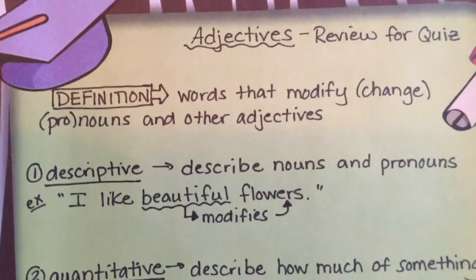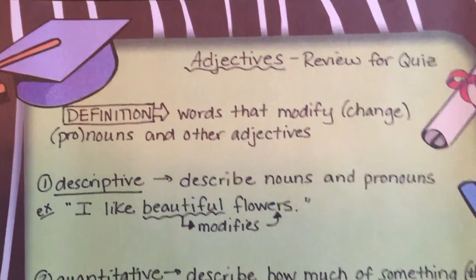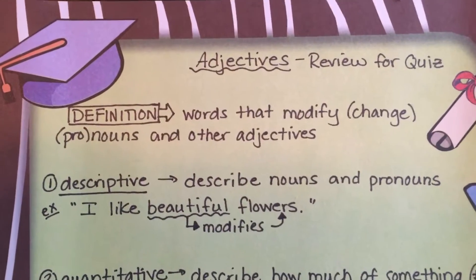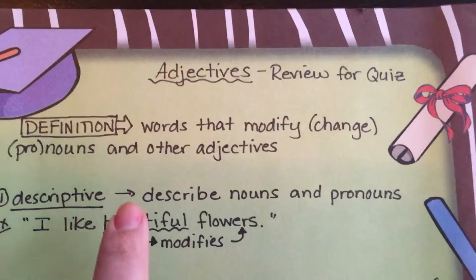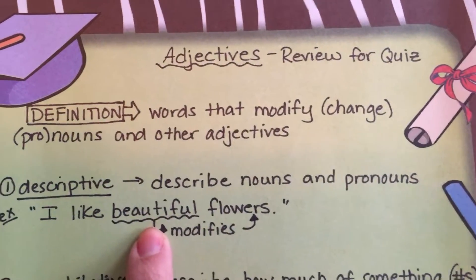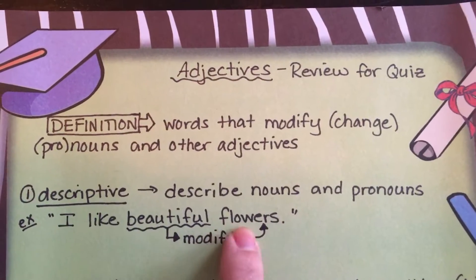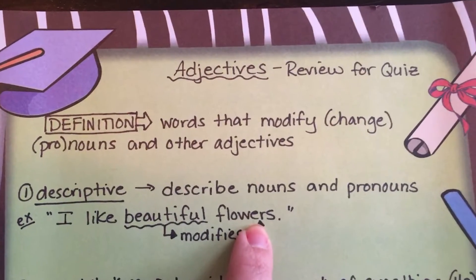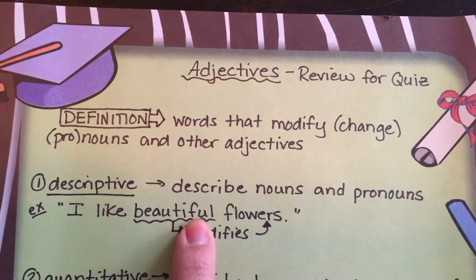Our first one, our most basic one, is descriptive — it describes nouns and pronouns. For example, 'I like beautiful flowers.' Beautiful here is the adjective and it's modifying the word flowers. Flowers is a thing, so flowers is a noun. What kind of flowers are they? They're beautiful flowers.